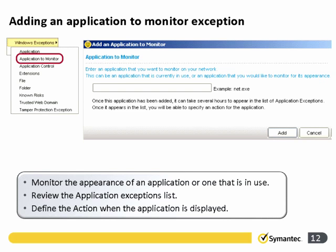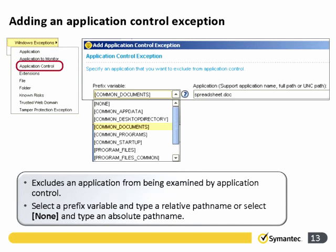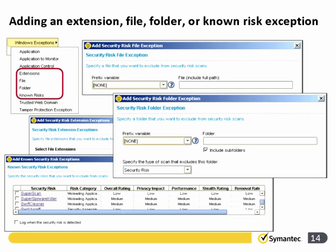We can review the applications list and define the action to take when the application is detected. We're adding in an Application Control exception here — Application Control can affect application performance, so you may wish to make some exceptions to this. Here we're also adding in an extension, file, folder, or known risk exception. Note that if you add a security risk exception, it should be for a trusted file.